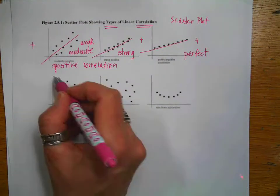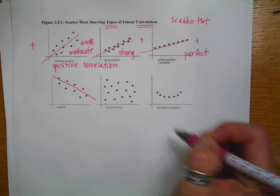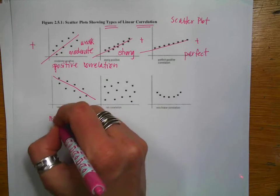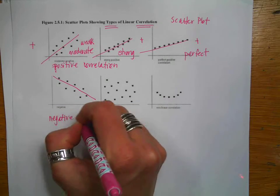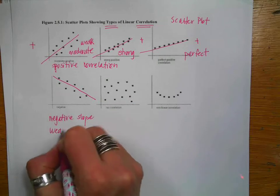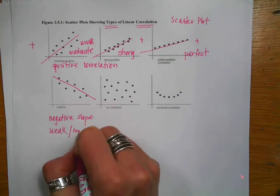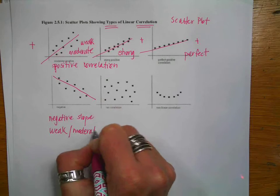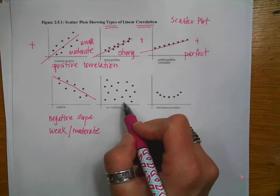On the other hand, notice that for these guys, if I kind of draw a line through the data, notice that this one has a negative slope. And we might call this a weak correlation or a moderate, depending on how generous you are.